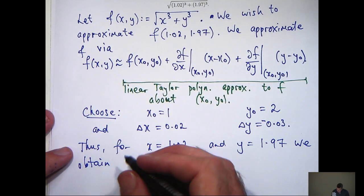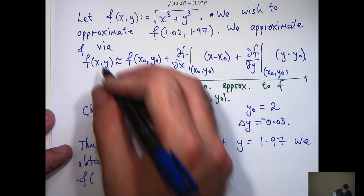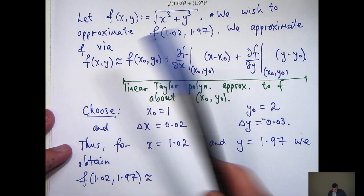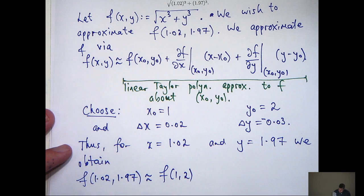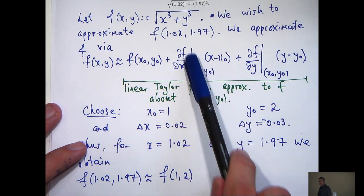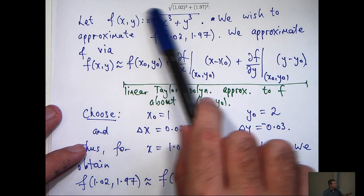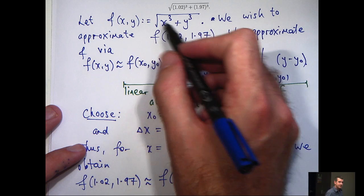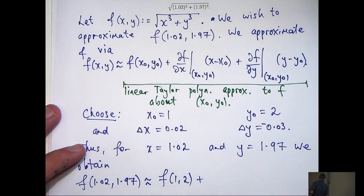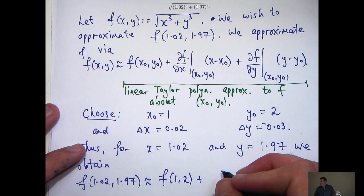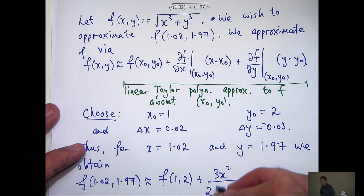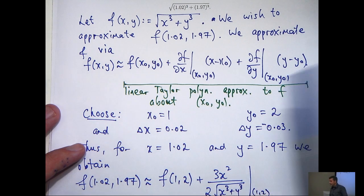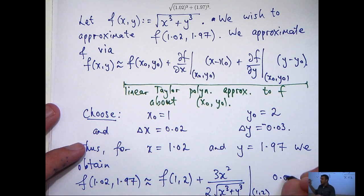Okay, so over here we're going to have the following. f of x0 comma y0 is just going to be f of 1 comma 2. Then move on here, and we need to calculate the partial derivative with respect to x from this function here, and evaluate it at the point 1 comma 2. So if I calculate the partial derivative holding y fixed and differentiating normally with respect to x, then I'm going to have something like this. And x minus x0, that's actually just going to be delta x, so I can just multiply everything by 0.02.